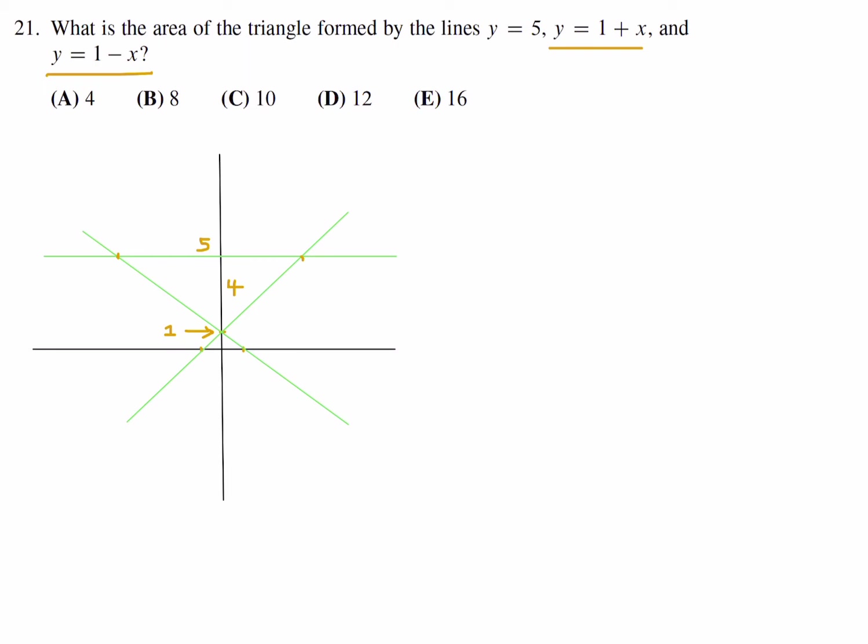So now I just have to concentrate on getting these two points, and those are the intersection points. The first intersection point is between y equals 5 and y equals 1 plus x. So set them equal to each other. 5 is equal to 1 plus x, so therefore x is 4. That makes sense, so this is 4.